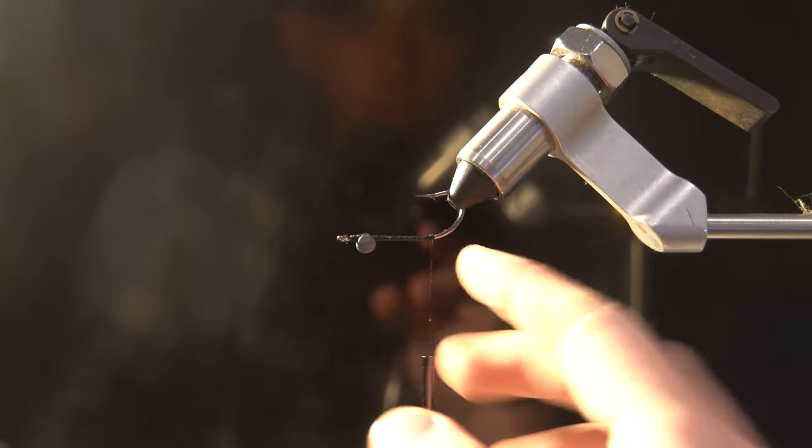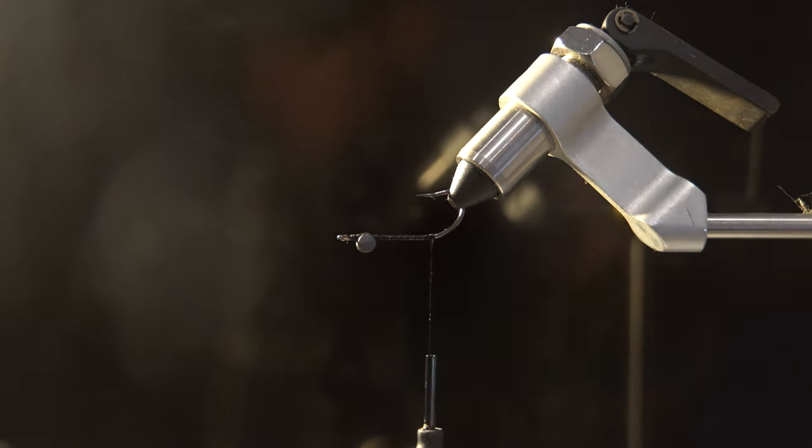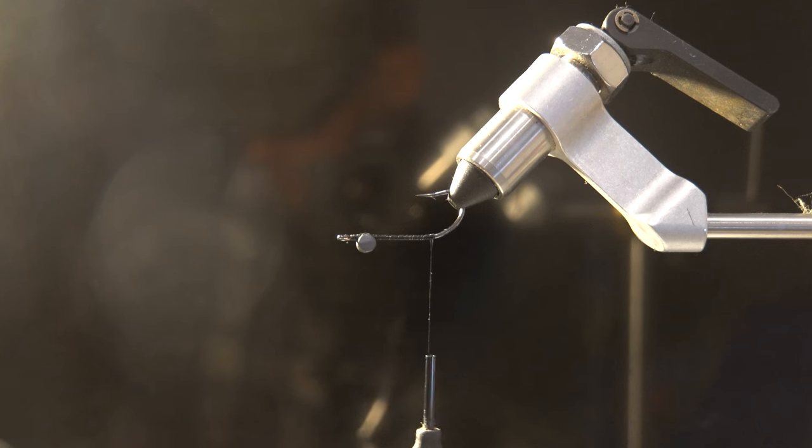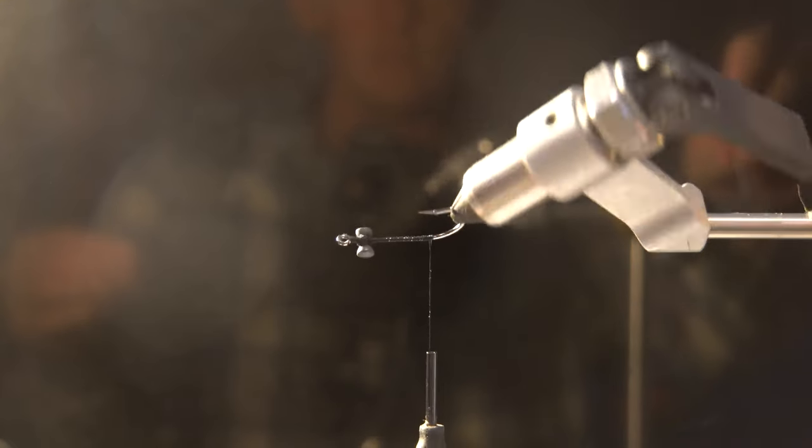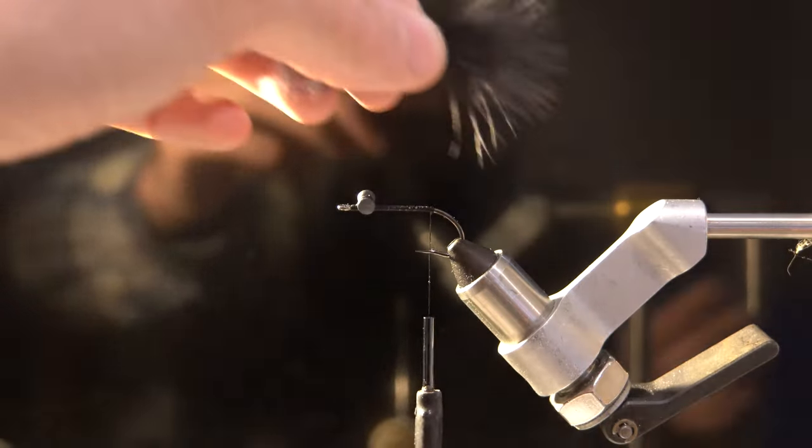We got the dumbbell eyes tied on and we brought the thread back to where the barb is on the hook. The first material we'll be tying on here is just the black marabou. This is kind of optional to add. I like it because it adds a little extra movement, adds a little more bulk to the fly. You can play around with how much you use, what colors, and all that.